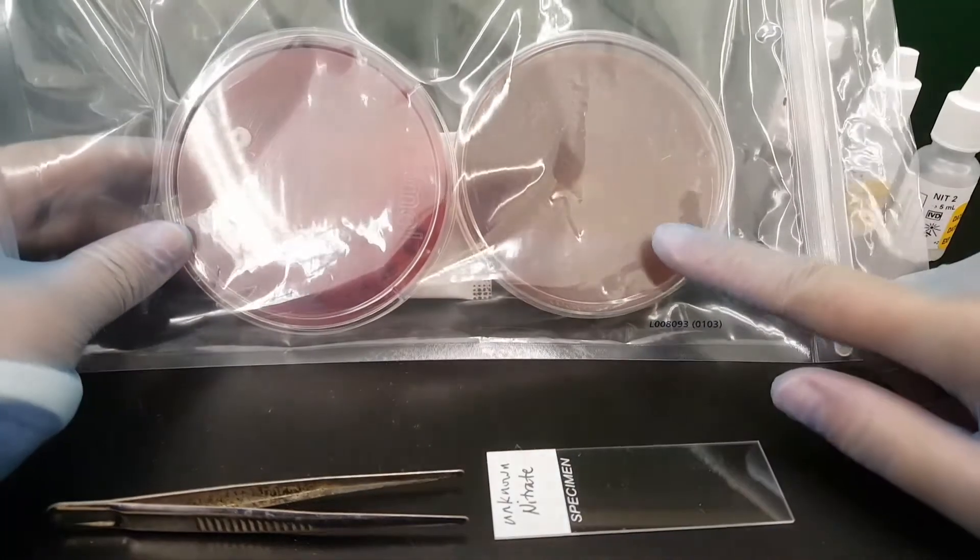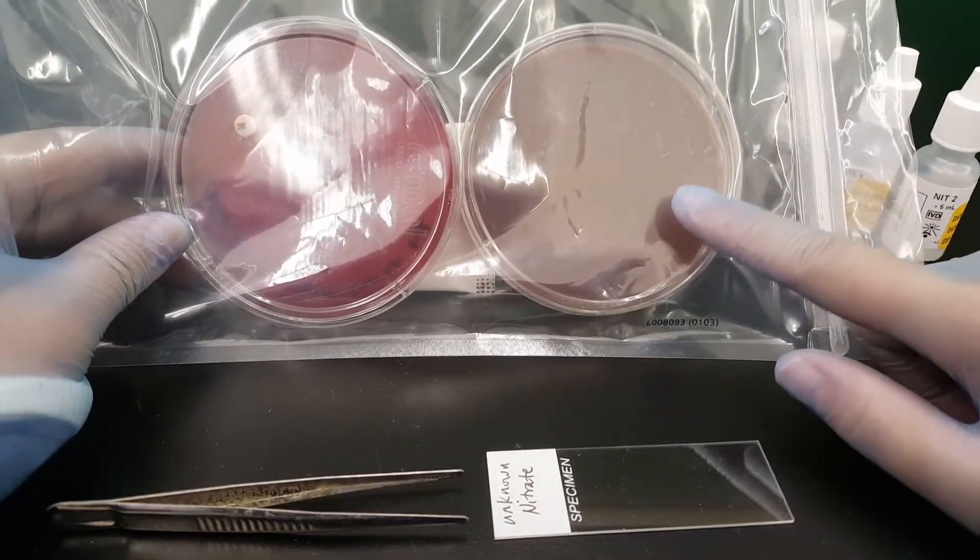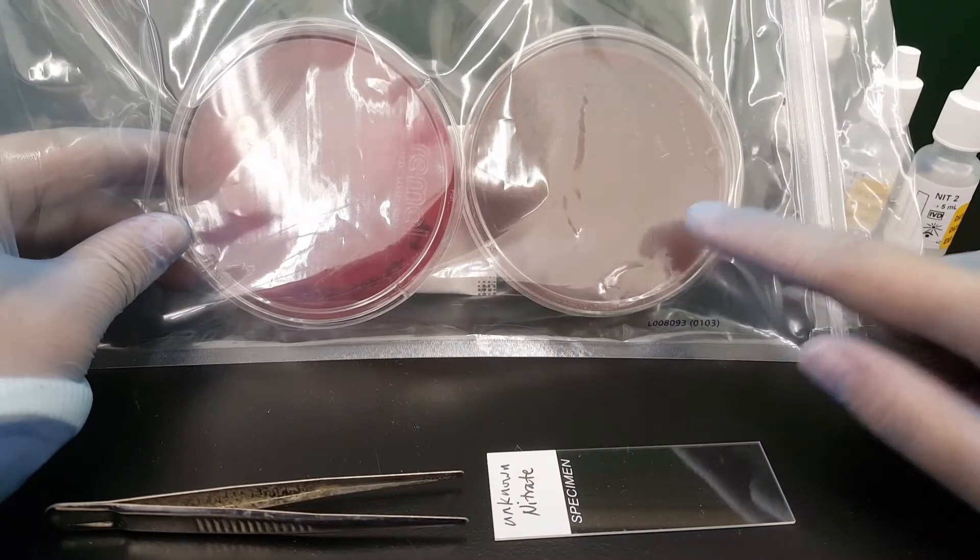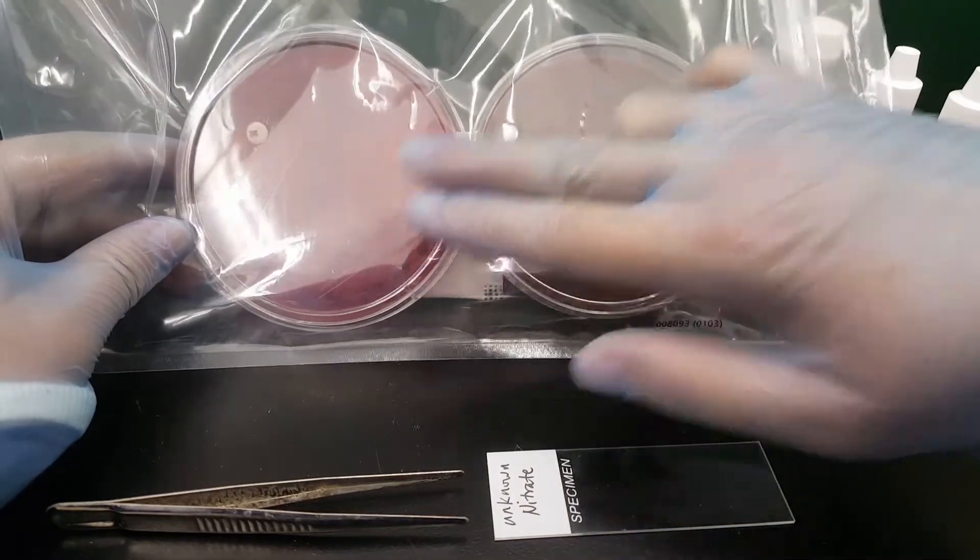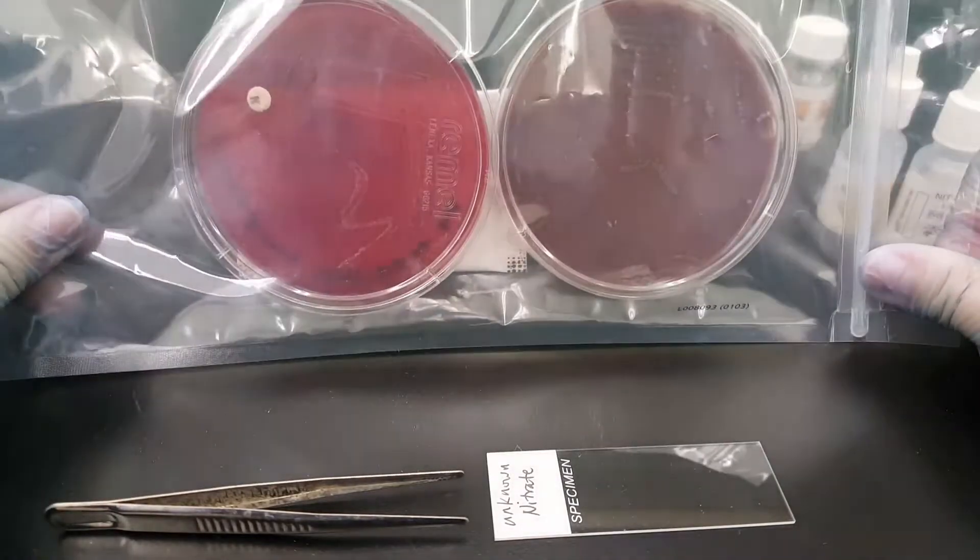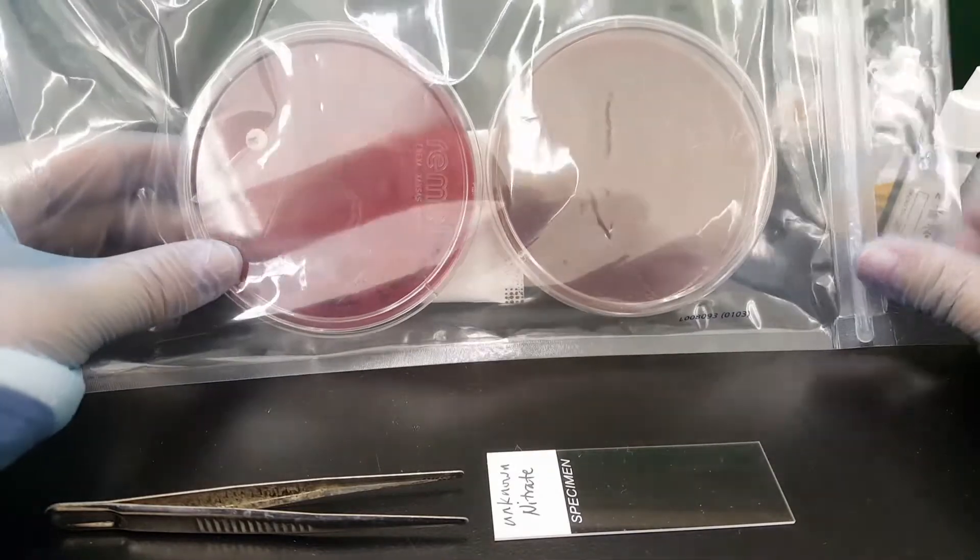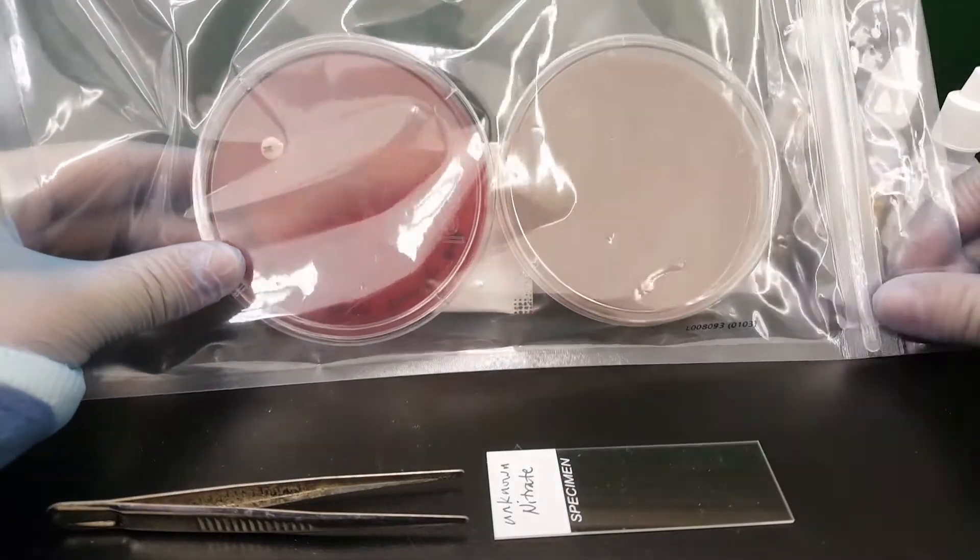Notice that we have the chocolate plate here. It was streaked first and it's considered a purity plate so that no matter what happens to this brucella blood agar plate, we know that the growth or lack of growth was due to the organism itself and not what is placed on the plate itself.